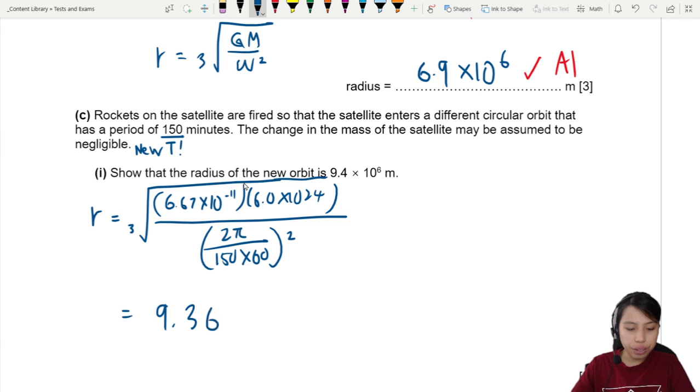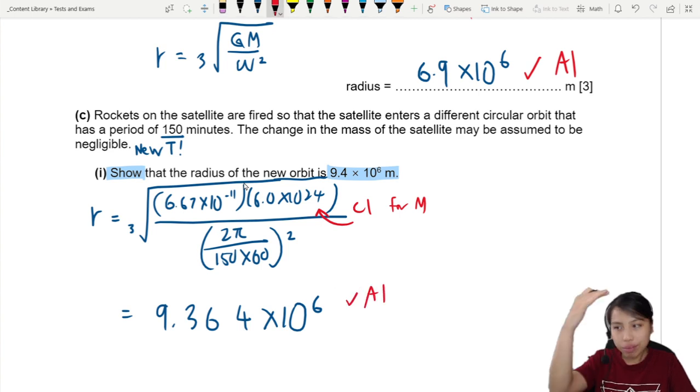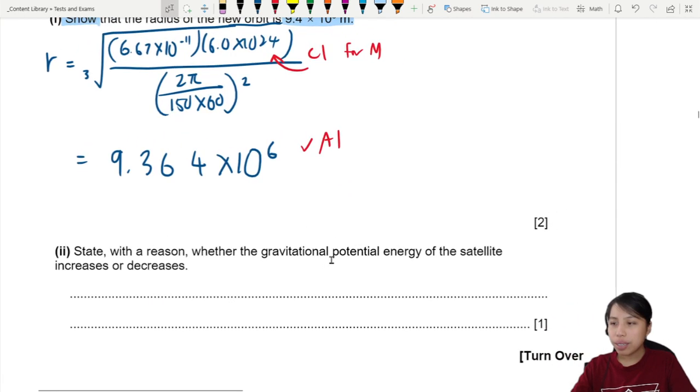This should give you 9.364 times 10 to the 6. Don't panic if you don't get to solve this part. You can actually take this value, because they asked you to show, they already give you the answer. Take that value and go on to the next part. Here they will give you 1 mark if you use the mass of the earth. And if you plug everything, get the correct answer, show your working is logical with no errors, you get the last mark.